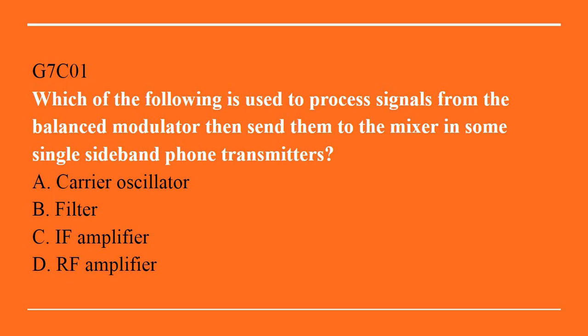G7C01: Which of the following is used to process signals from the balanced modulator, then send them to the mixer in some single sideband phone transmitter? A. Carry oscillator. B. Filter. C. IF filter. D. RF amplifier. Answer is B. Filter.